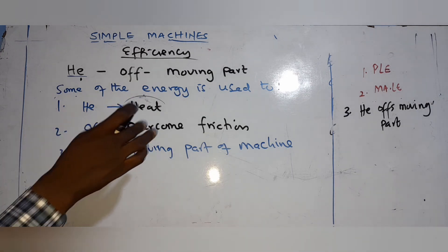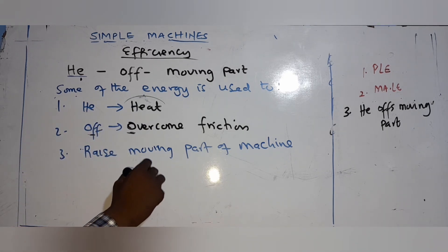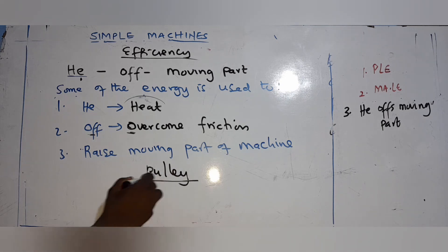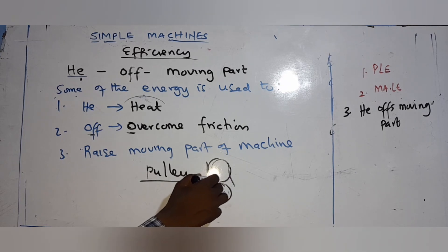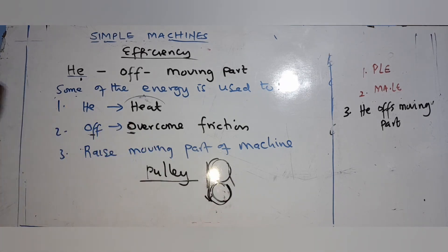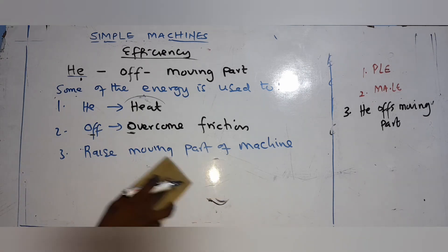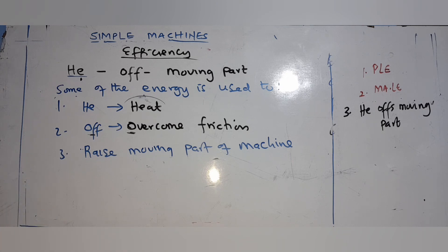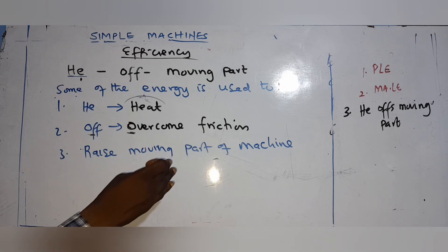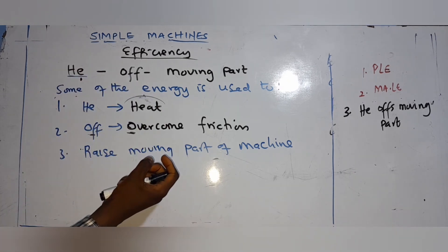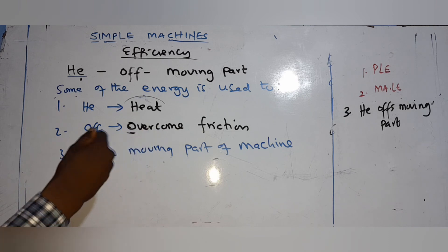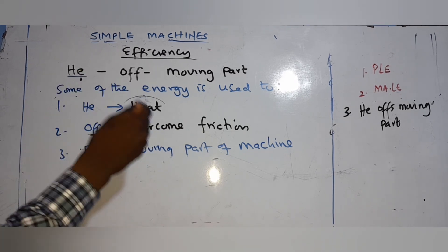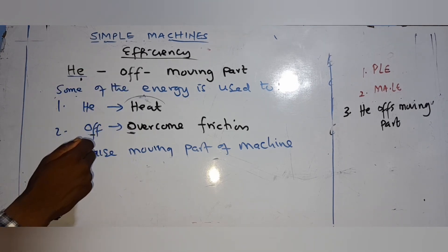Also, don't forget the pulley — it is also a type of simple machine. You can have a single pulley or two pulleys together. In the next video we'll be looking at how to calculate mechanical advantage, velocity ratio, and efficiency — including how to find mechanical advantage when given efficiency. Thank you for following. Do have a nice time.